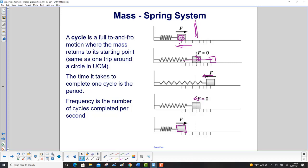The time it takes to complete one cycle is the period. Frequency is the number of cycles completed per second, just like uniform circular motion.